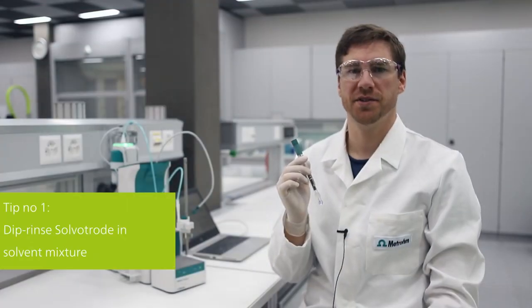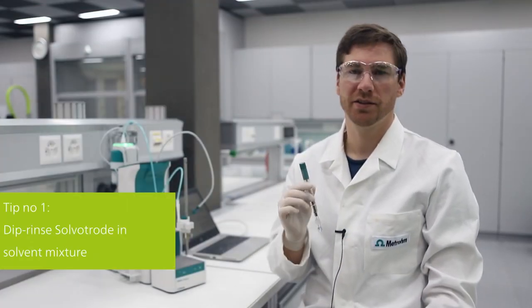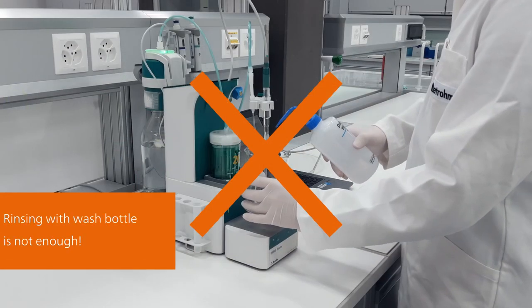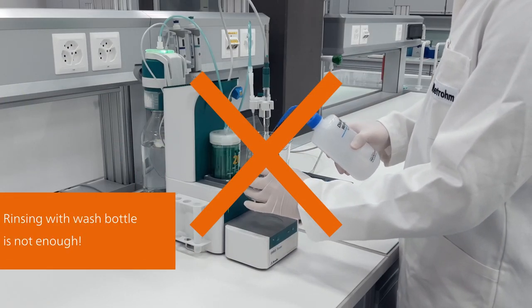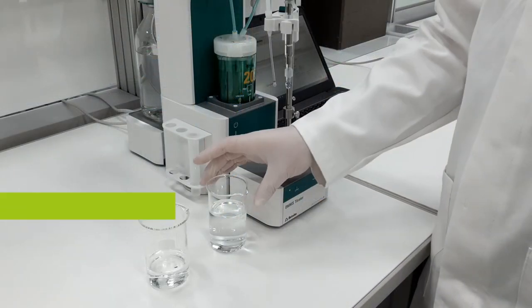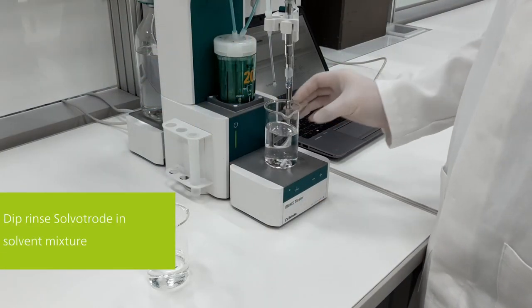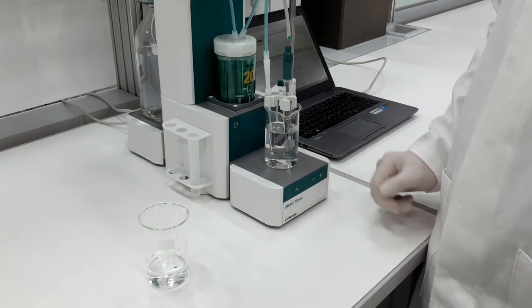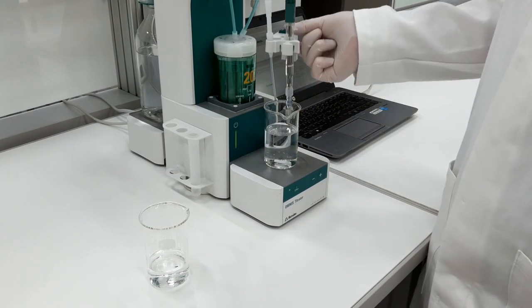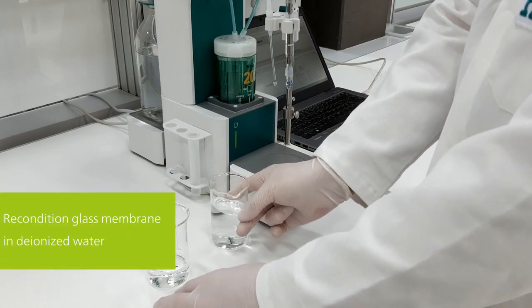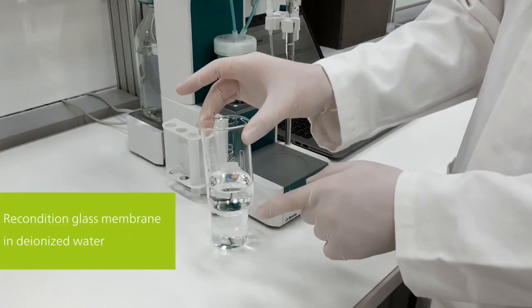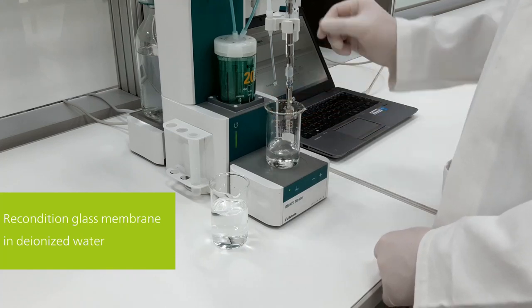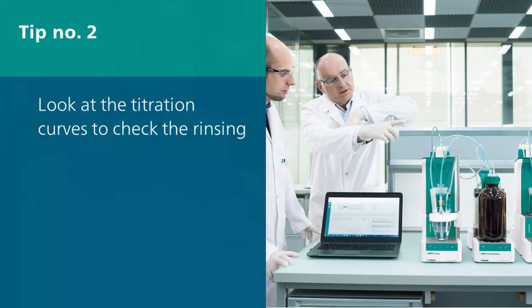Here is my first tip for proper cleaning: dip rinse your electrode. Rinsing with a wash bottle is usually not enough to remove the sample. Dip rinsing means immerse your electrode in a beaker filled with solvent and keep stirring for one to three minutes. After this, do not forget to place the glass membrane, and the glass membrane only, in deionized water to recondition it. Make sure that conditioning time is long enough.